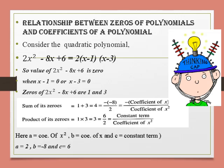Now, if we take the sum of its zeros — the zeros are 1 and 3 — so sum of zeros equals 1 plus 3 equals 4. And if we write this in terms of the coefficients, it is minus of (minus 8) upon 2. Minus 8 is the coefficient of x and 2 is the coefficient of x square. So this gives us: minus of coefficient of x upon coefficient of x square. This relation we got from the answers.